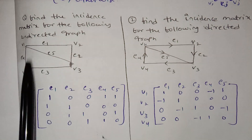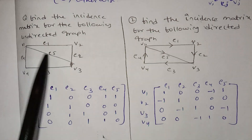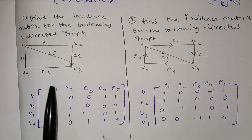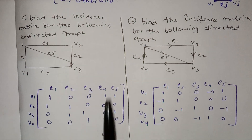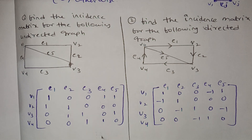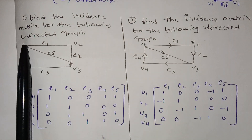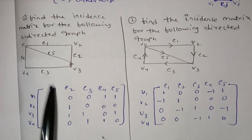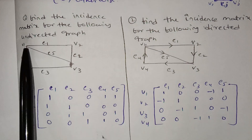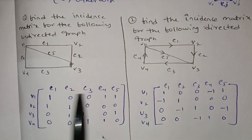Next, for the incidence matrix example: we have edges E1, V2, E3, E4, E5 — so 5 edges total. We write the columns as E1, E2, E3, E4, E5. For V1-E1: so we write 1. For V1-E2: so we write 0.